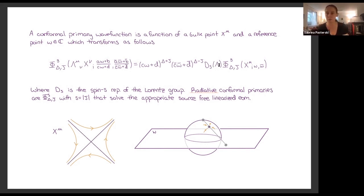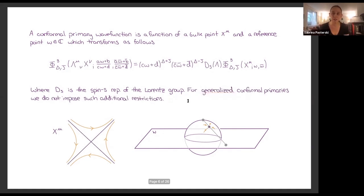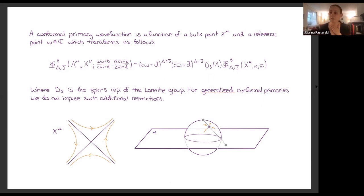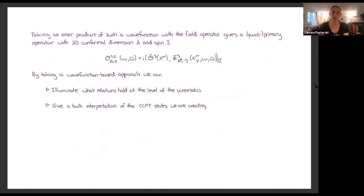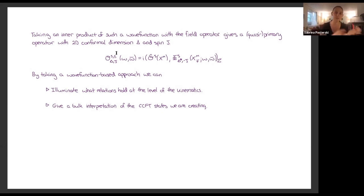For radiative conformal primaries, s equals j, they solve the appropriate source-free equations of motion, and this representation is for the corresponding helicity. For generalized conformal primaries I'm going to relax a lot of that. In some instances I still want it to be a solution to the equation of motion to construct appropriate external particle states, but there are interesting contexts — corresponding to shockwaves — where you can construct something that transforms correctly but will have a source.